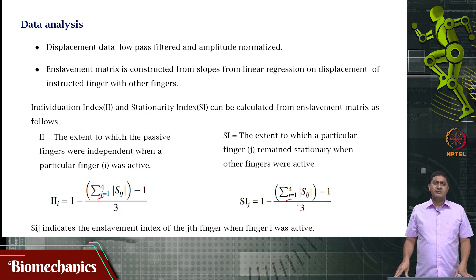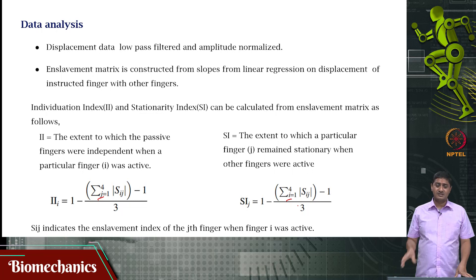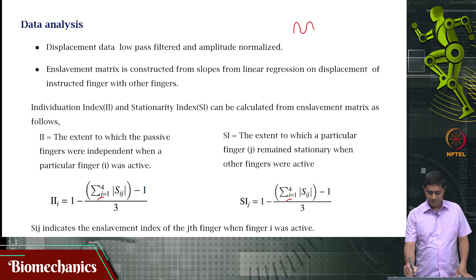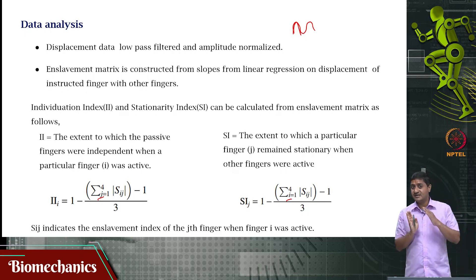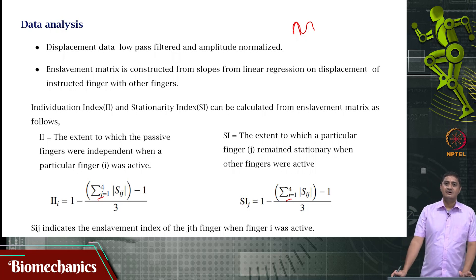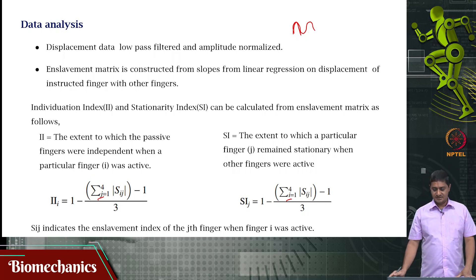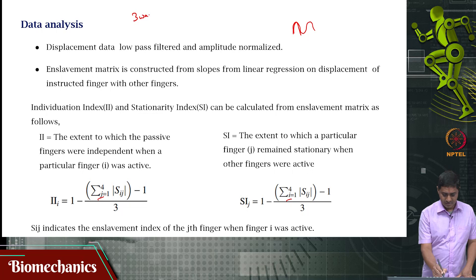We performed a statistical analysis on the individuation index, stationarity index, and the enslavement matrices. For the individuation index, we used a three-way ANOVA to examine: direction of movement (whether the finger is flexing or extending, i.e., up-going or down-going half cycle), wrist posture, and which particular finger was instructed.